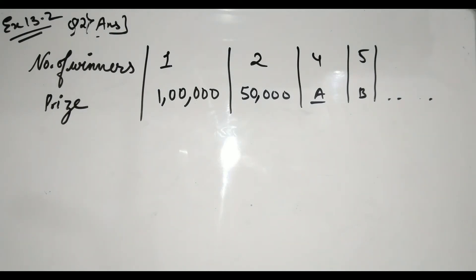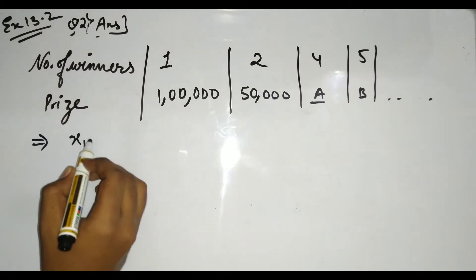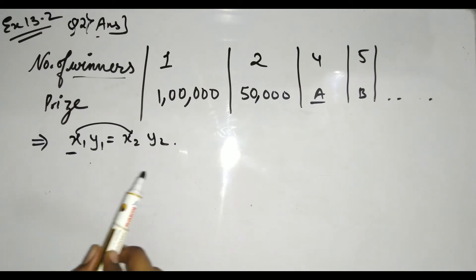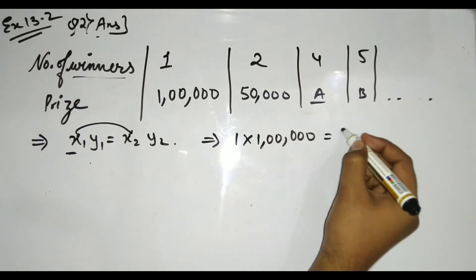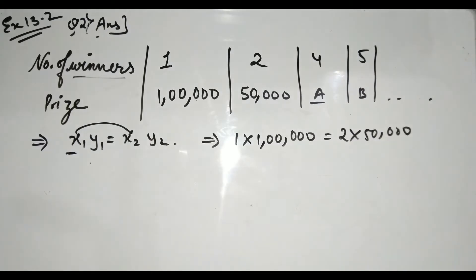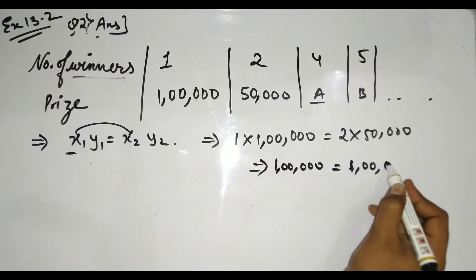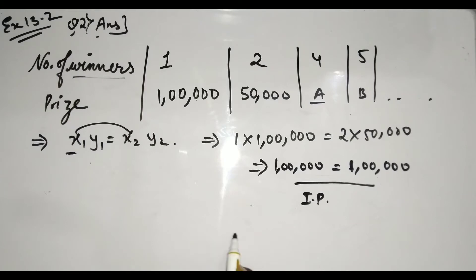Let us denote the unknown quantities as a and b. To test whether it is inverse proportion, we use x1 × y1 = x2 × y2. Taking x1 = 1, y1 = 1 lakh, x2 = 2, y2 = 50,000: 1 × 1 lakh equals 2 × 50,000, which is again 1 lakh. Since LHS equals RHS, it is inverse proportion.